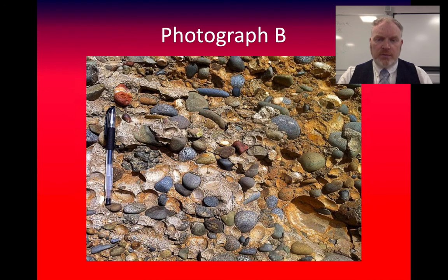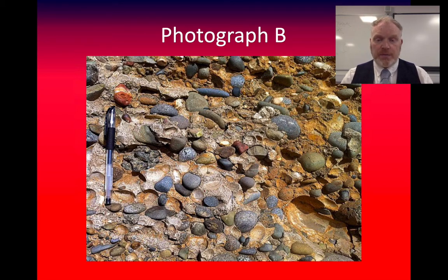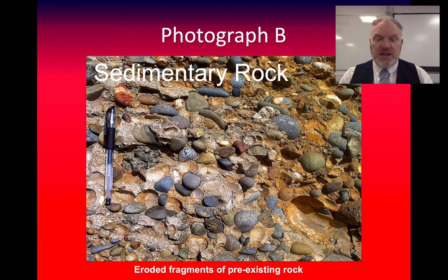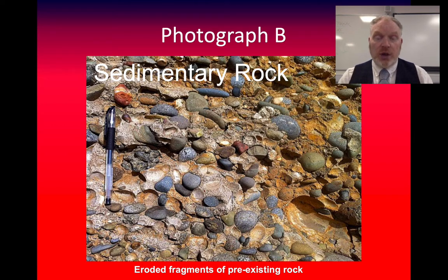Photograph B shows a picture of a cliff face — notice there's a pen there for scale. Good geological photos should have a scale to show how big they are. This is an image of a sedimentary rock, because we can see the eroded fragments of pre-existing rock; we can actually see the rounded pebbles within this rock that have been stuck together. This type of sedimentary rock is called a conglomerate — we saw it in the previous practical.